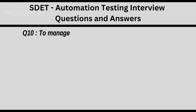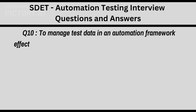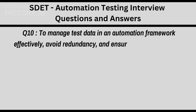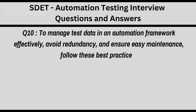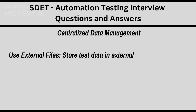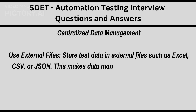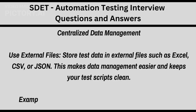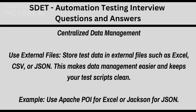Q10: To manage test data in an automation framework effectively, avoid redundancy, and ensure easy maintenance, follow these best practices. Centralized data management: use external files — store test data in external files such as Excel, CSV, or JSON. This makes data management easier and keeps your test scripts clean. For example, use Apache POI for Excel or Jackson for JSON.